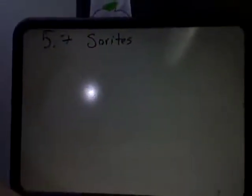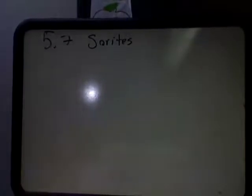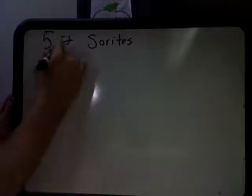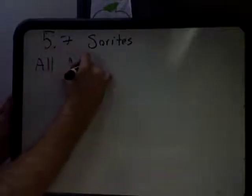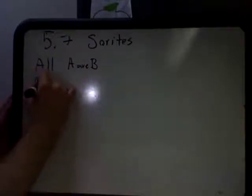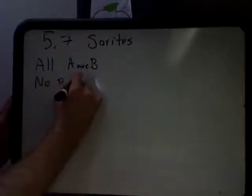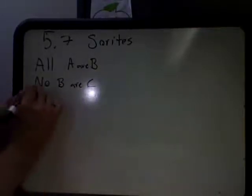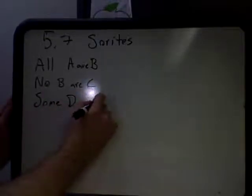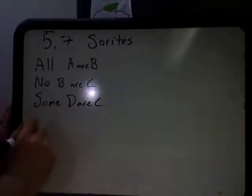So here's what I have in mind: 5.7 Sorites. Let's take an example of a sorites. This is a very, very simple one, and in fact you'll see that this is actually the first problem in your homework. You have: All A or B. The second premise is No B or C. The third premise is Some D or C. And the fourth premise is Some D or not A.